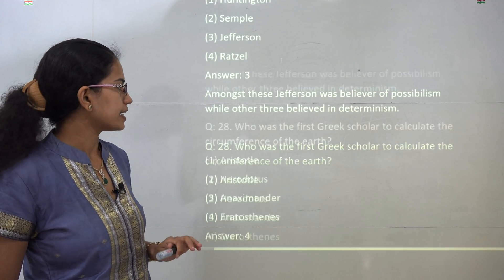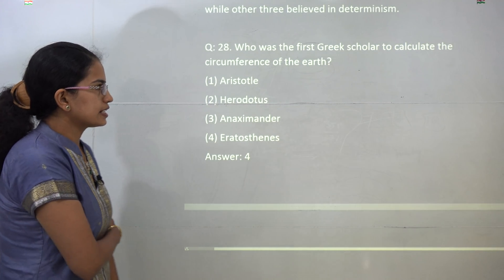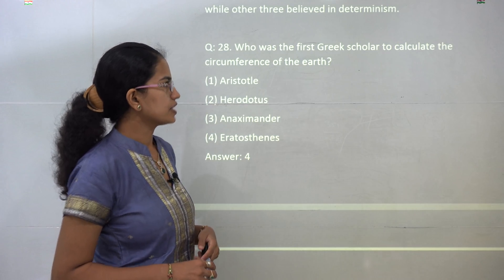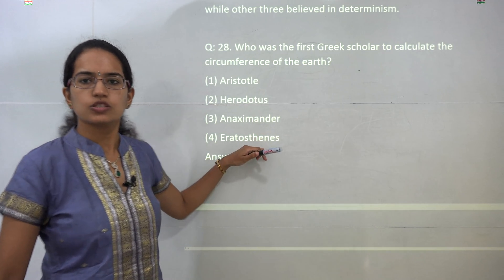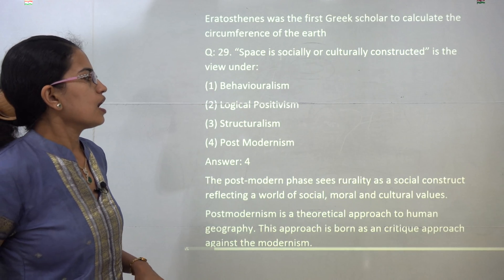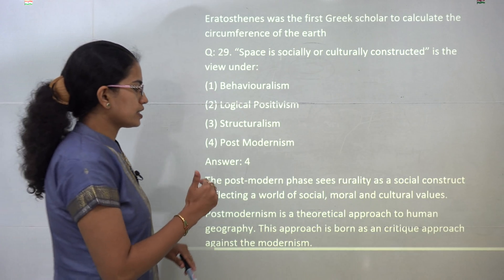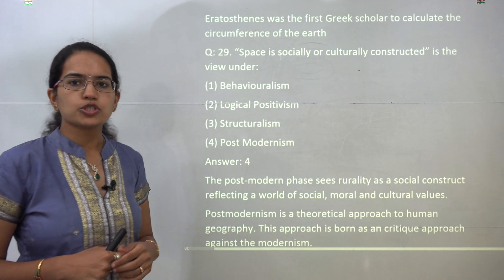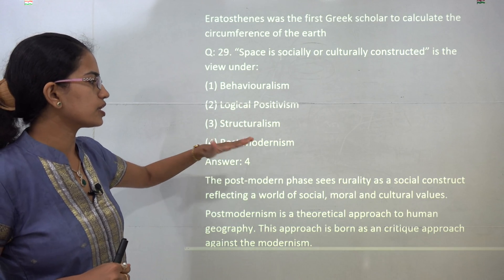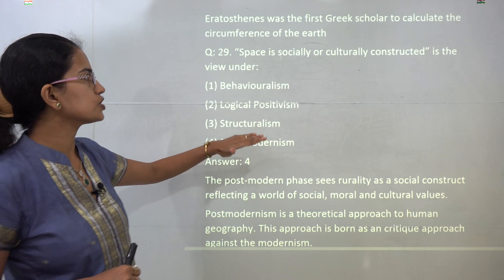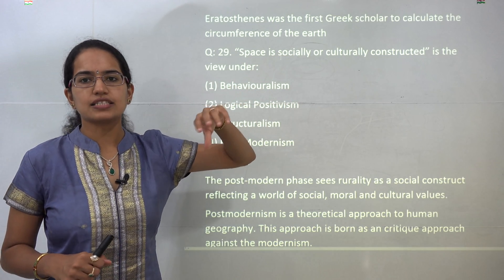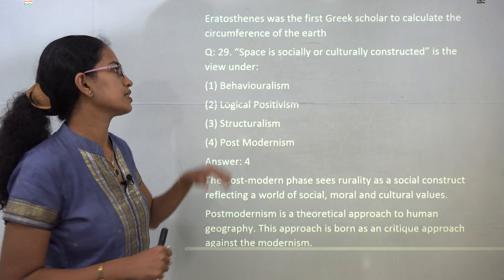Under the Greek scholars, the first to calculate the circumference of Earth was Eratosthenes, so Eratosthenes (option 4) would be the correct answer. Postmodernism was a theoretical approach to human geography and was a critic of the modernistic approach. Under this approach, they talked about space as a social and cultural construct, so option 4 is the correct choice.